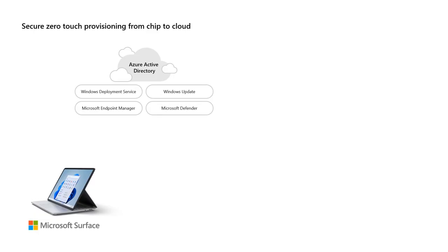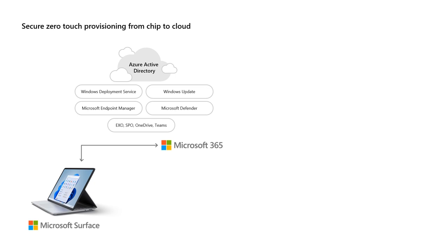Cloud services don't just provide strong management. When a Surface device is provisioned through the cloud using Autopilot and Microsoft Endpoint Manager, we have Microsoft 365 services like OneDrive, OneDrive Vault, Azure Active Directory, and our core productivity services such as Teams, SharePoint, and Exchange. In combination with things like Microsoft 365 Compliance and Microsoft Defender, we combine all of these capabilities with the device itself to provide the security that we need in today's hybrid work environment, while providing the best user experience and a great IT Pro experience as well.